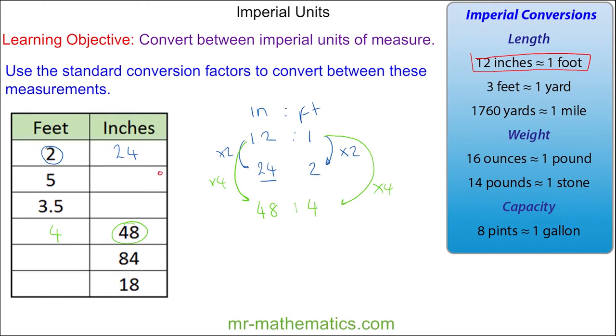Do you want to try and work out the missing four values here? You can pause the video and resume it when you're ready. So here we have 60 inches and 42, and then 7 feet and 1.5.